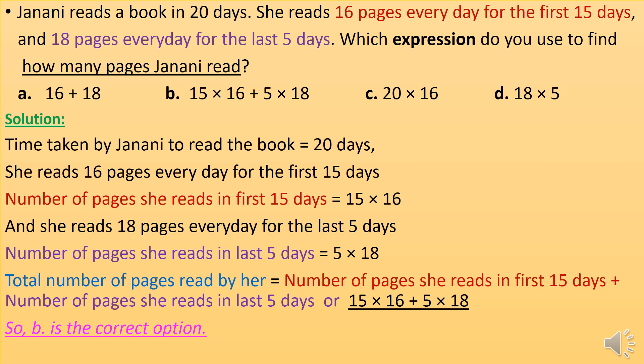She reads 16 pages every day for the first 15 days, so number of pages in first 15 days is 15 into 16. She reads 18 pages every day for the last 5 days, so number of pages in last 5 days is 5 into 18. Total number of pages read is pages in first 15 days plus pages in last 5 days, which is 15 into 16 plus 5 into 18. So B is the correct option.